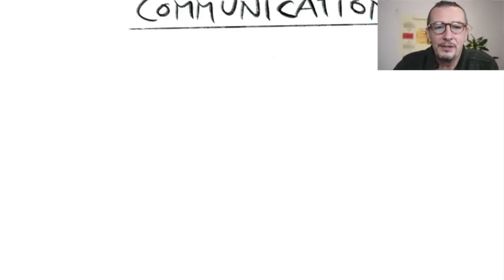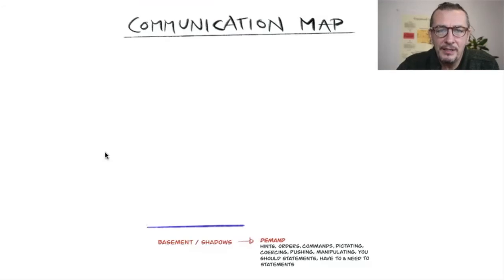I've mapped that out in a dynamic of communication. Shadow communication is demanding—stuff that doesn't work: making orders, commands, dictating, cursing, pushing, manipulating, 'you should' statements, 'have to' or 'need to' statements. They don't work.